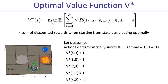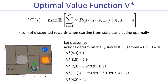Let's change it a little bit. What if there's discounting, gamma equals 0.9? V star (4,3) is still one. How about (3,3)? Point nine. One step over requires one multiplication. Five steps over — we need to multiply that five times. And (4,2) will be negative one because that's just all that can happen to you there.